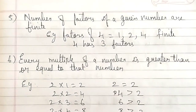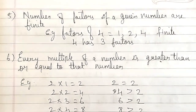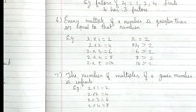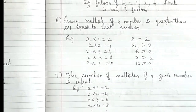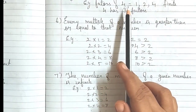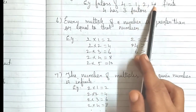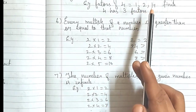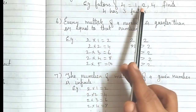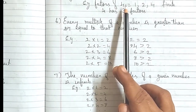Fifth: The number of factors of a given number is finite. Finite means countable. For example, the factors of 4 are 1, 2, and 4. So how many factors does 4 have? It has 3 factors — that is countable, that is finite. So the number of factors of a number is finite.